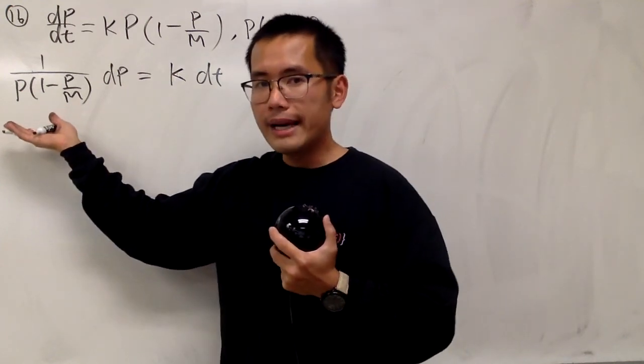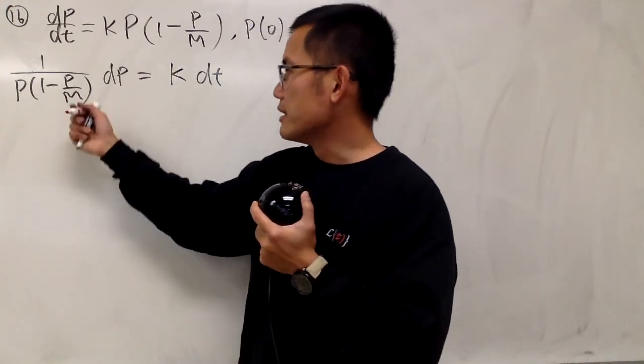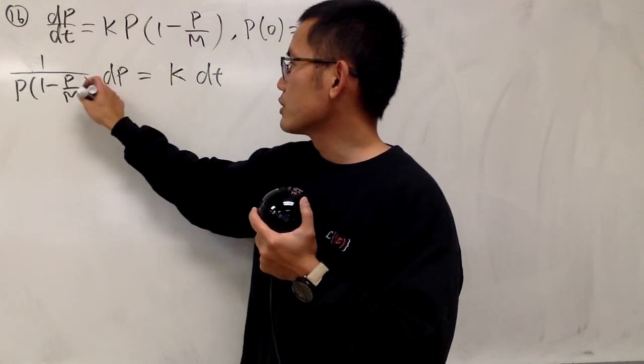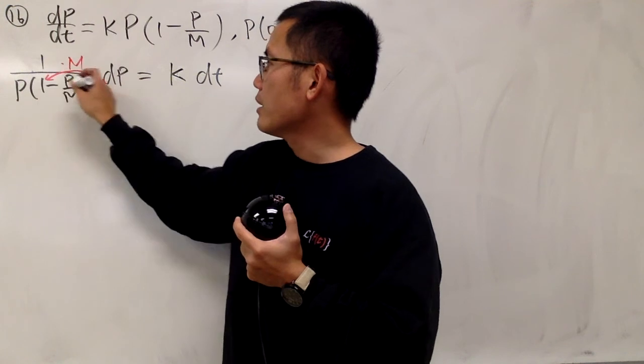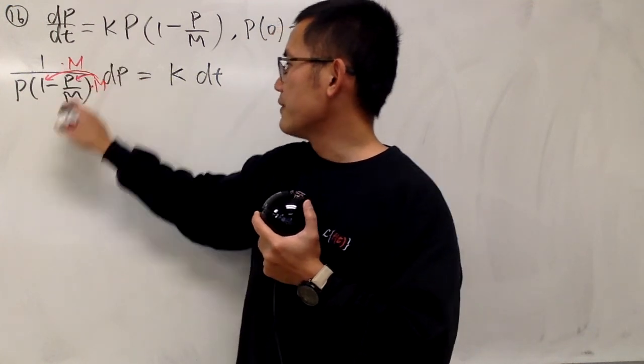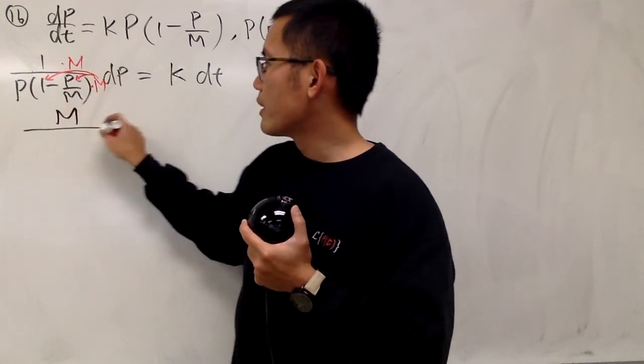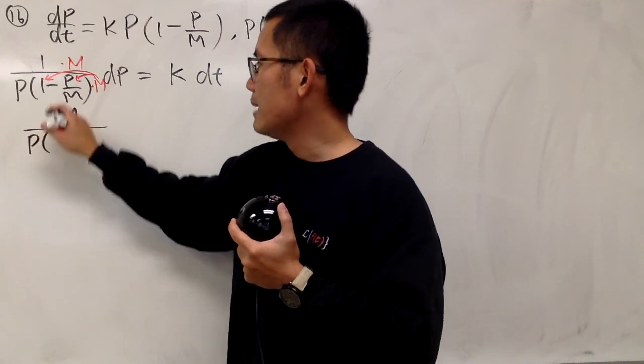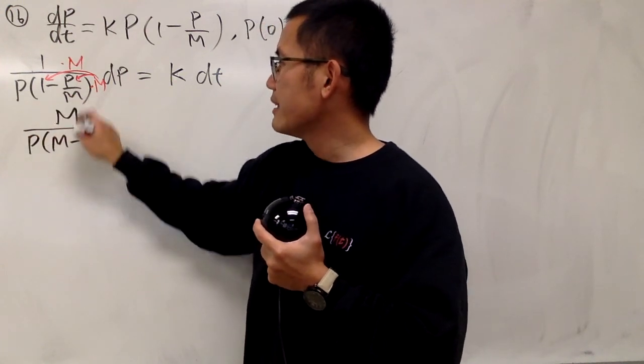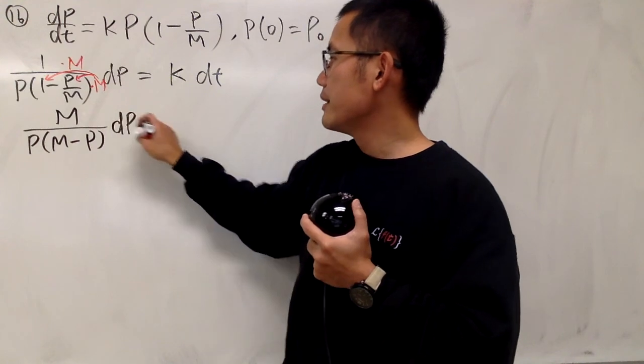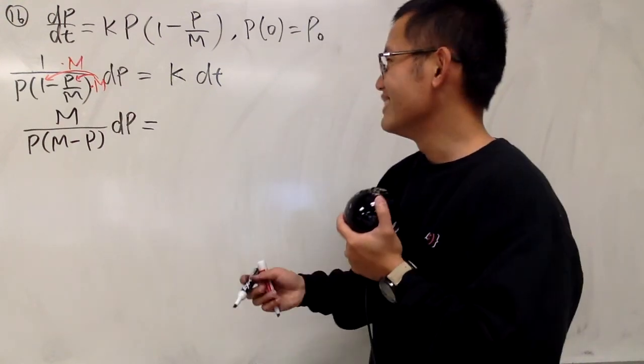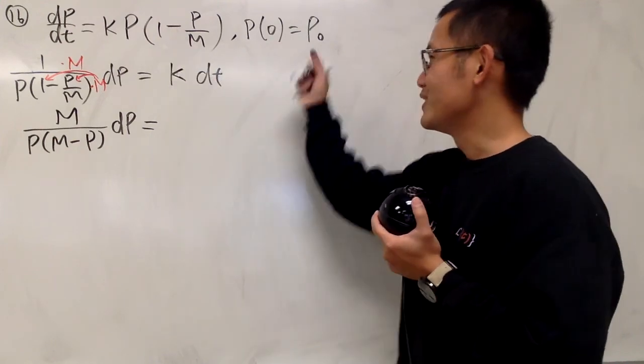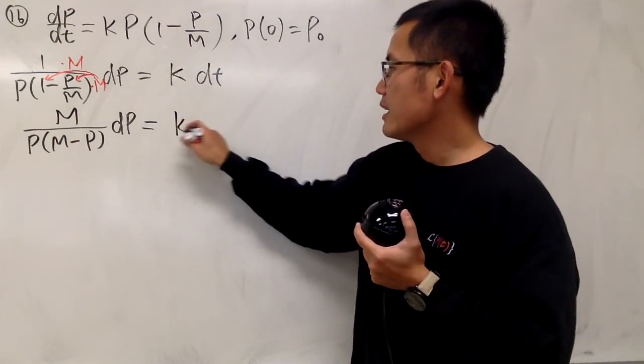Now, before I integrate this, I will clean things up. Because this right here is a little complex fraction, so what I will do is multiply the top and bottom by m. So if you distribute the m, we get M over p(m-p) dp equals k dt. You don't see any numbers anymore right here. The only number is 1.